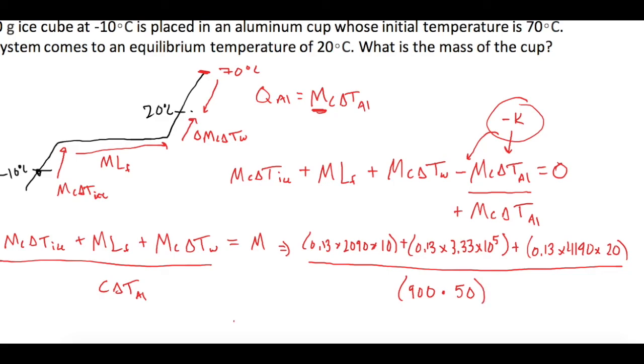So when we do all that, the mass of the pan now will give us 1.264 kilograms, which is equal to 1.3 kilograms.